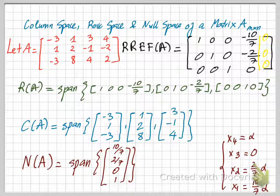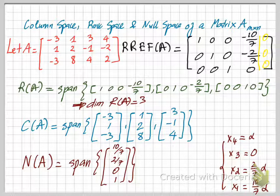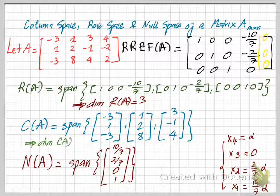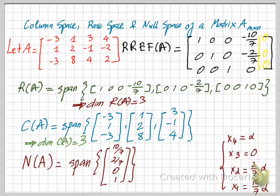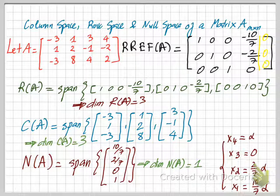Since three vectors form a basis for the row space of A, the dimension of the row space is 3. And since we only need one vector to span the null space of A, the dimension of the null space is 1.